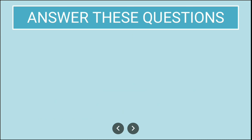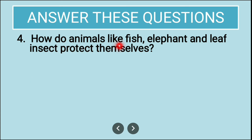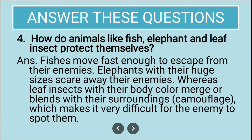How do animals like fish, elephant, and leaf insect protect themselves? Fishes move fast enough to escape from their enemies. Elephants with their huge size scare away their enemies. Leaf insects have body color that blends with their surrounding, making it very difficult for enemies to spot them.